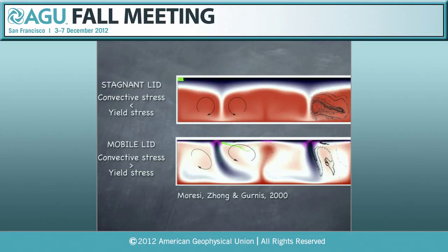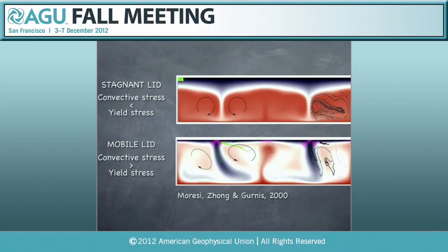I want to use this concept to revisit the problem of mantle convection. In particular, I'm interested to know if we can use it to explain a switch from a stagnant lid convective regime to a mobile lid convective regime.